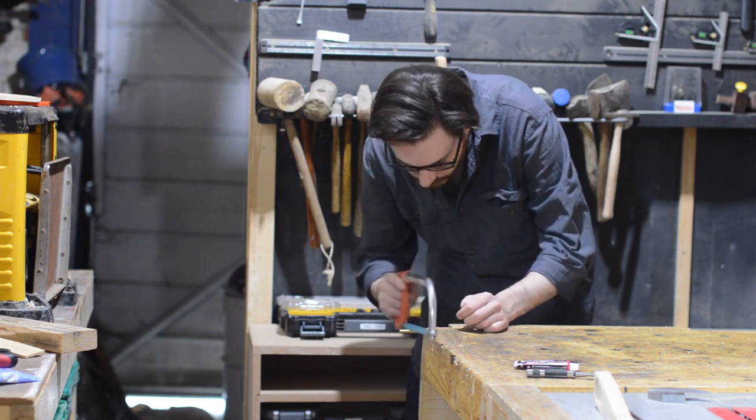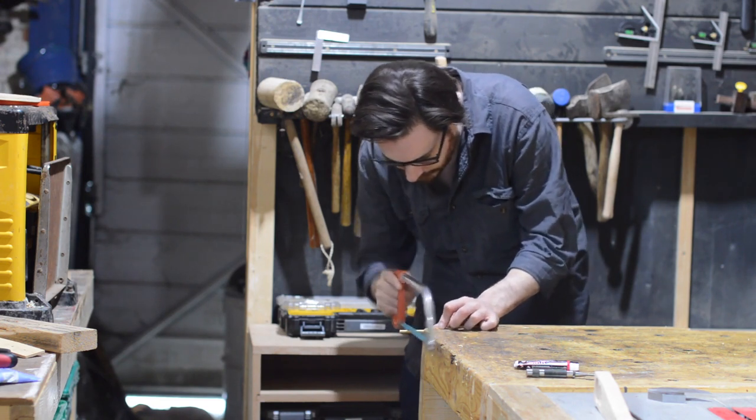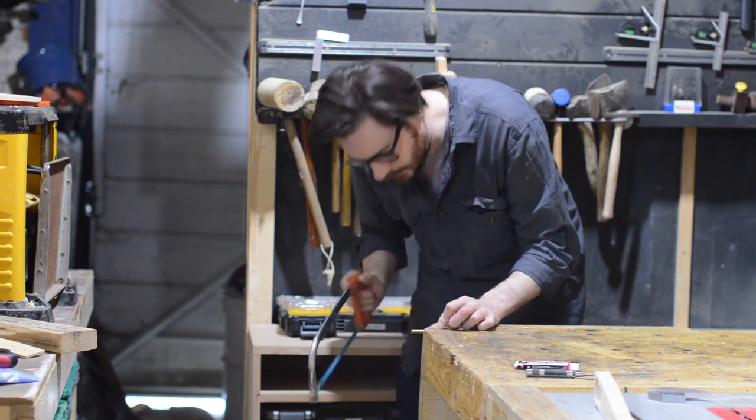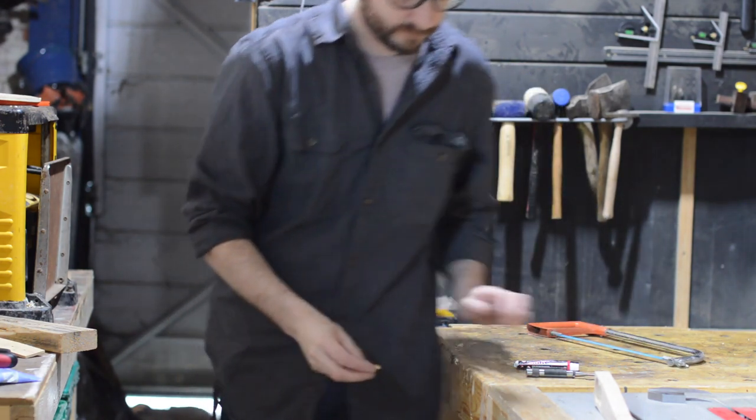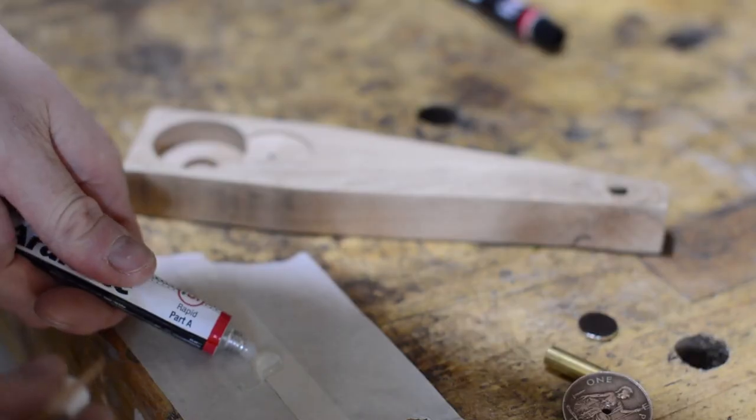That smaller eight mil hole at the end of the handle is for a lanyard to go through, but first I want to line it with some brass tube. I cut a piece down slightly wider than the handle, so then I can sand it down flush.